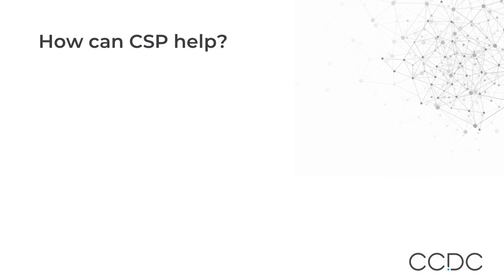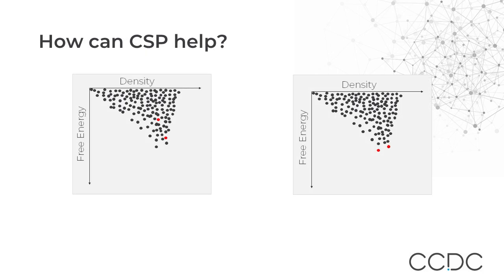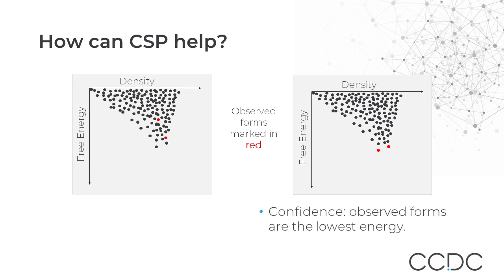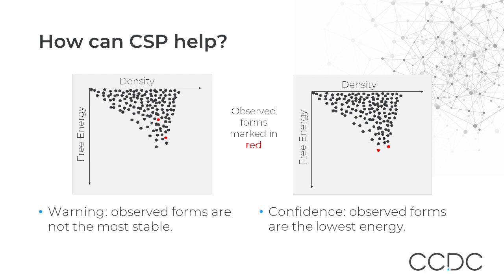So how can CSP help here? Typically a CSP study will give us a large range of possible crystal structures that have a low free energy and are densely packed, and only a few of these structures are generally observed. We can view on the landscape where the observed forms are in relation to the other predictions. Look at the red dots in the landscape — imagine these were the observed forms. The plot on the right would give confidence as the observed forms are the lowest in energy, but the plot on the left would be a warning sign, as there are seemingly unobserved forms that could emerge and would be more thermodynamically stable.